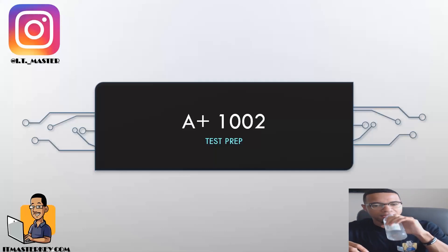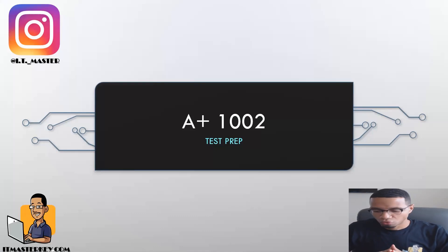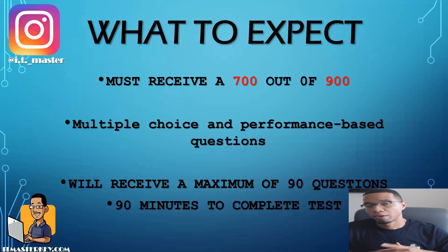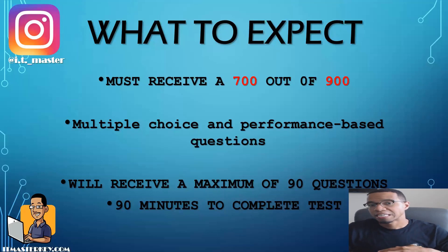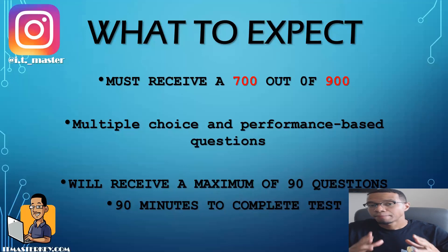Next up is the 1002 test prep. So this is the second part of A Plus. Remember, you've got to pass the first part and the second part to actually be A Plus certified. On this exam, you need a 700 out of 900 to pass and gain the certification. You're going to get multiple choice, scenario-based questions, and performance-based questions, and you'll have 90 minutes to knock out all 90 questions. Let's get to our first question.